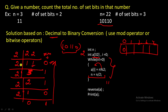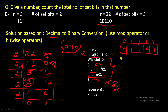So: 22 mod 2 gives remainder 0, stored at index 0; number becomes 11. Then 11 mod 2 gives remainder 1, stored at index 1; number becomes 5. Then 5 mod 2 gives remainder 1, stored at index 2; number becomes 2, and so on. Everything gets saved in the array, then we reverse the array to get the binary representation 1 0 1 1 0.